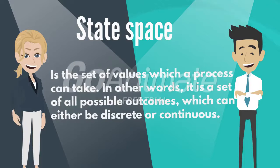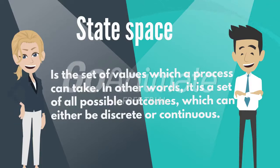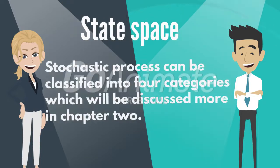A state space is the set of values which a process can take. In other words, it is the set of all possible outcomes, which can either be discrete or continuous. Stochastic processes can be classified into four categories, which will be discussed more in Chapter 2.